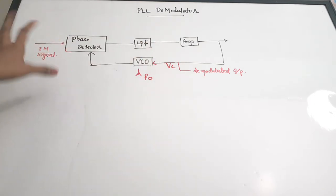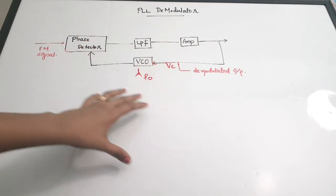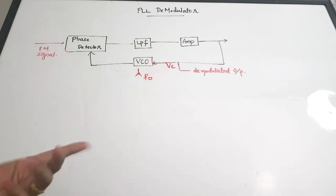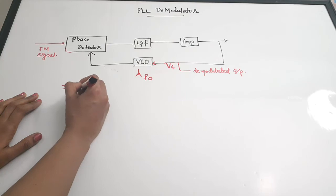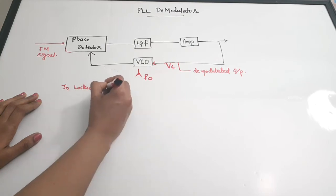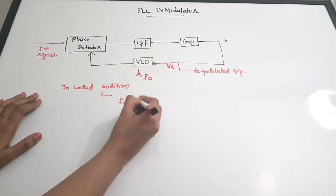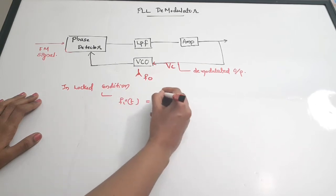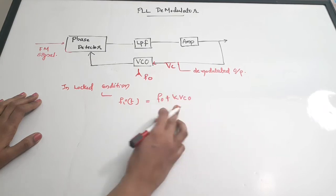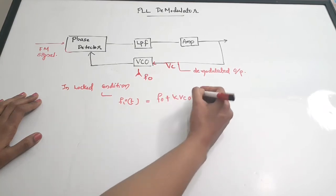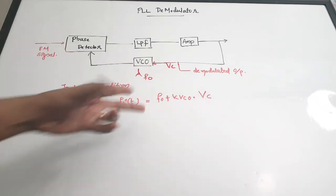The FM signal's frequency follows a relation with the voltage controlled oscillator frequency. In locked condition, FI(t) — the input frequency — is equal to F0 plus KVCO, which is a constant for the voltage controlled oscillator, multiplied by VC. VC is the control voltage of the VCO.